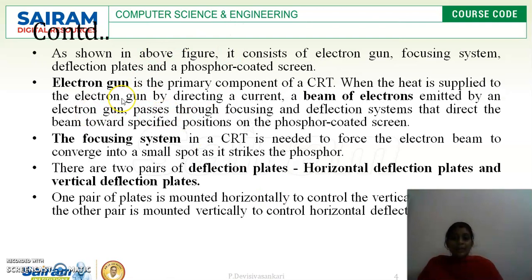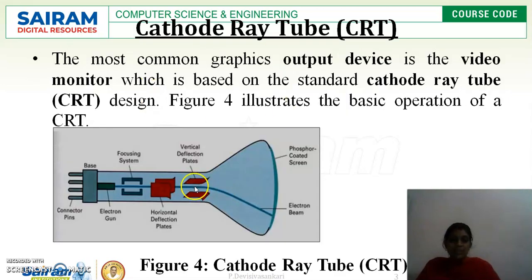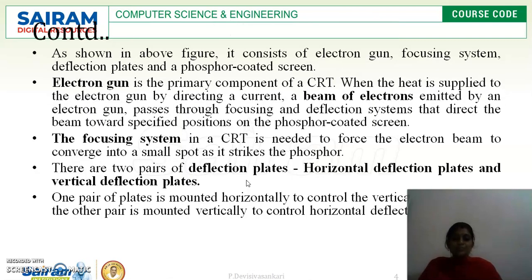The electron gun is considered the primary component of the CRT. The connector pin connected to the electricity directs the electron gun, and a beam of electrons emitted by the electron gun passes through the focusing system as well as the deflection systems. The beam passes through horizontal as well as vertical deflection plates; otherwise it will just scatter. The main role of the focusing system is to force the electron beam to converge into a small spot as it strikes the phosphorous.